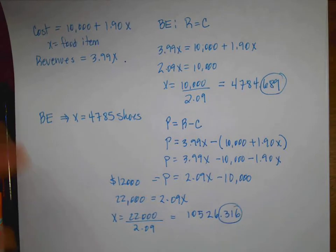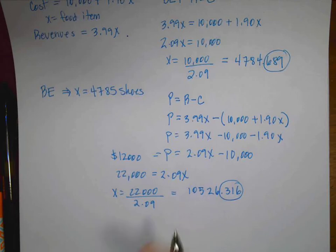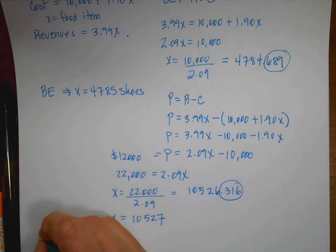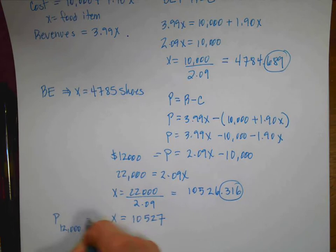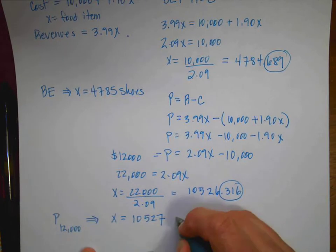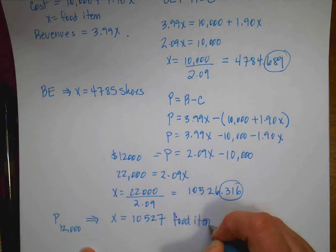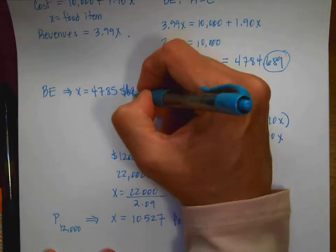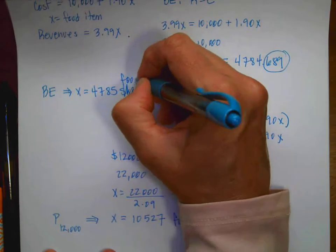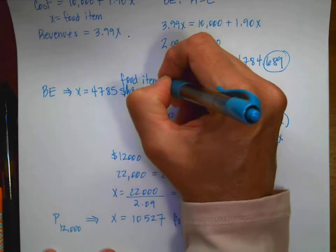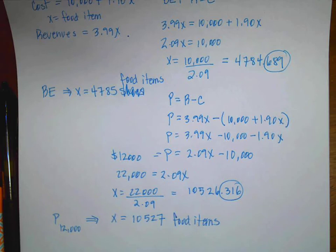.316. Remember, 0.316 of a food item would be kind of gross. So I'm going to round off. 10, 5, 2, 7. So for a profit of $12,000, I have to sell 10,527 food items. And I just caught my mistake up here. That's not shoes. That is food items.